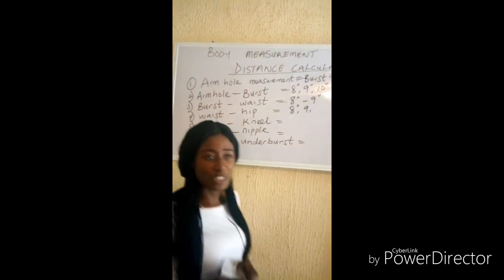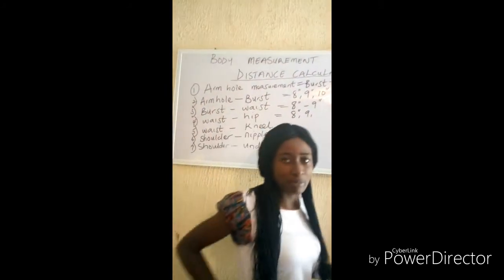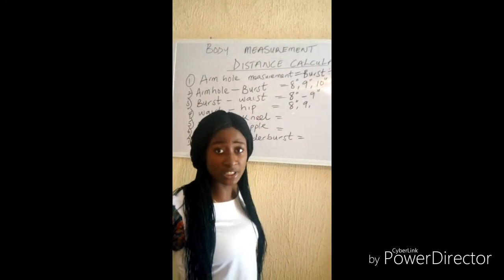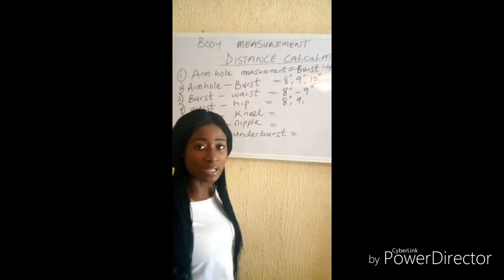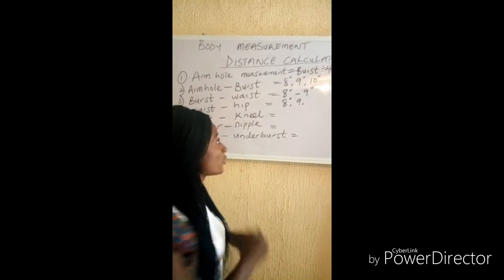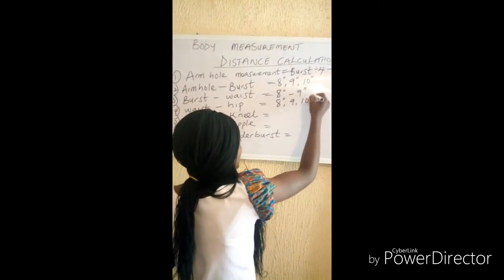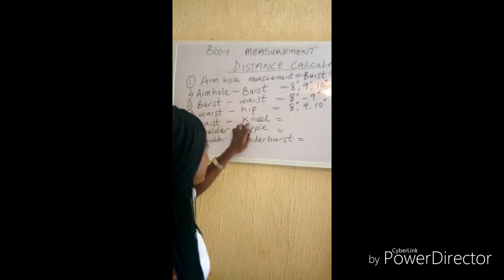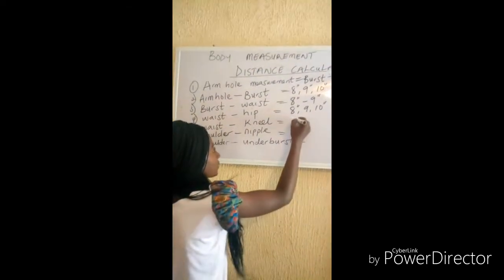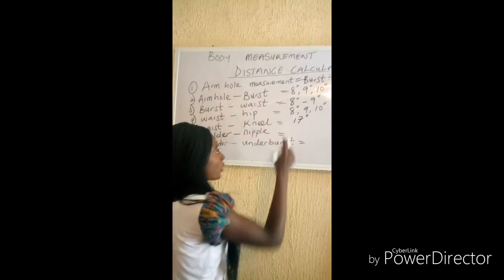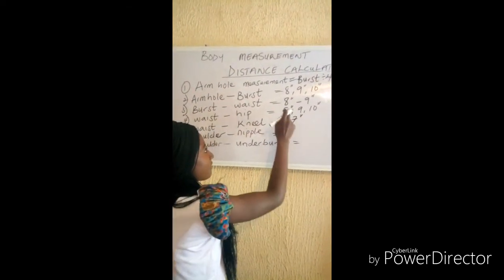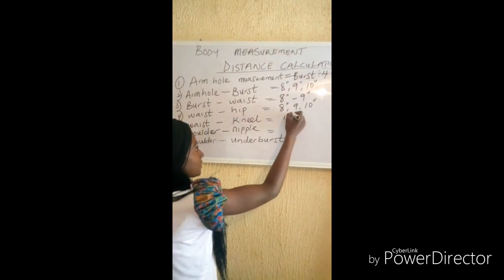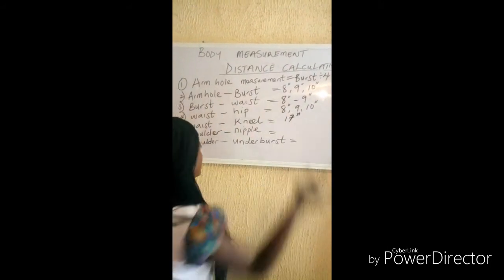For people that have lower parts, it depends on the body shape of the individual — for those with the lower parts, you have 10 inches. From the waist to the knee, you are going to have 17 inches, because you have 8 inches from waist to hip plus the remaining distance to the knee.